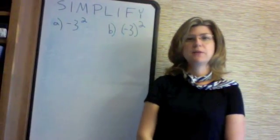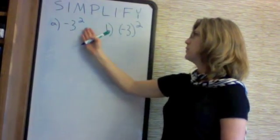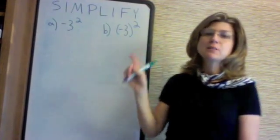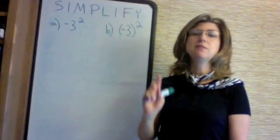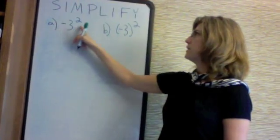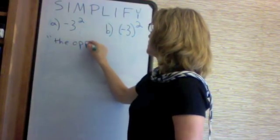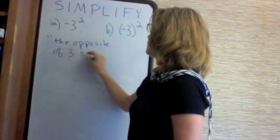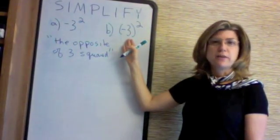Let's look at the difference between two common expressions we see in mathematics: (a) minus 3 squared, and (b) the quantity minus 3 squared. What is the difference? That exponent applies only to the number or variable to its immediate left unless there are parentheses — and surprisingly, for many students, that does not include the sign. So in (a) we have the opposite of 3 squared.